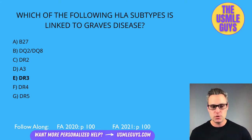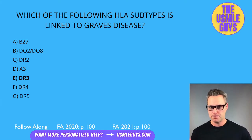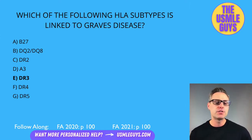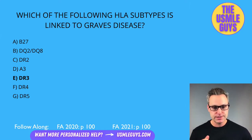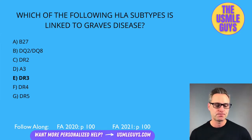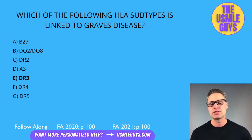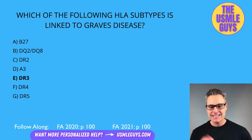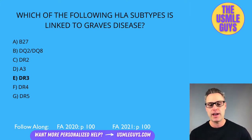DQ2 and DQ8 are associated with celiac disease. DR2 is associated with multiple sclerosis, SLE, Goodpasture syndrome, and hay fever. DR3 is associated with type 1 diabetes, Graves disease, SLE, Addison disease, and Hashimoto thyroiditis.